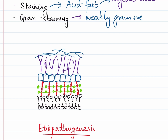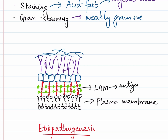So this is the structure of the cell wall of Mycobacterium tuberculosis. Here below we have the plasma membrane, which is a lipid bilayer. Attached to the plasma membrane is the LAM, that is the Lipoarabinomannan. Its peculiarity is that it is an important antigen that confers the ability of Mycobacterium to resist and proliferate inside the macrophages.